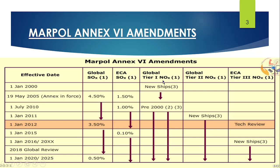For NOx, there was a three-tier development. From 1st January 2011, all new ships needed to follow Tier 1 NOx emission regulations. From 1st January 2016, Tier 3 NOx emission limits were brought into the picture. Tier 1, Tier 2, and Tier 3 are implemented phase-wise to progressively reduce the NOx percentage in line with technological development.